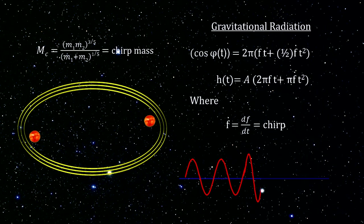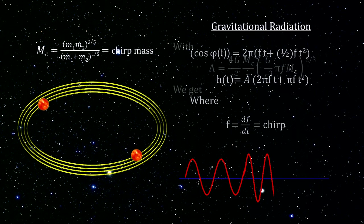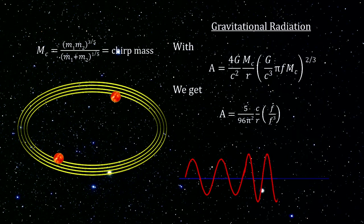The rate that the frequency is changing is called the chirp. It gives us the ability to express the amplitude of the gravitational wave in terms of the frequency and the rate the frequency is changing instead of the masses and the distance between the masses.